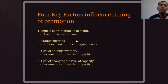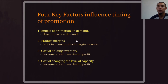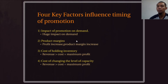Next are the four key factors influencing the timing of promotion. Number one is impact of promotion on demand: the timing chosen for promotion must be at the right time so that demand boosts up, followed by supply. This gives supply chain members the opportunity to produce more product and match supply with demand, yielding high profit. Number two is product margin — the profit margin per product, calculated by subtracting the cost of production from the sale price. When promotion is done at ideal timing, profit margin per product increases.